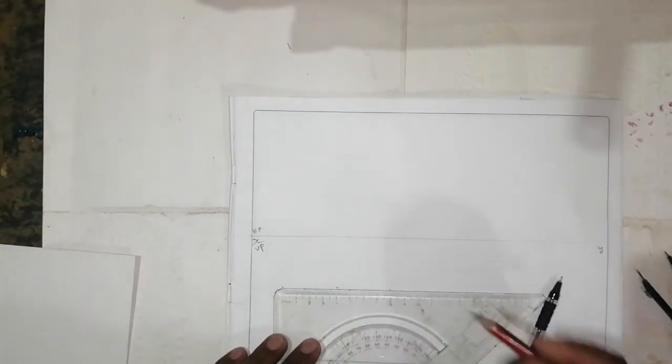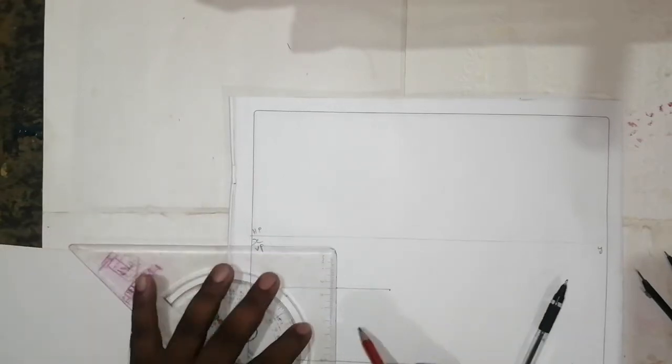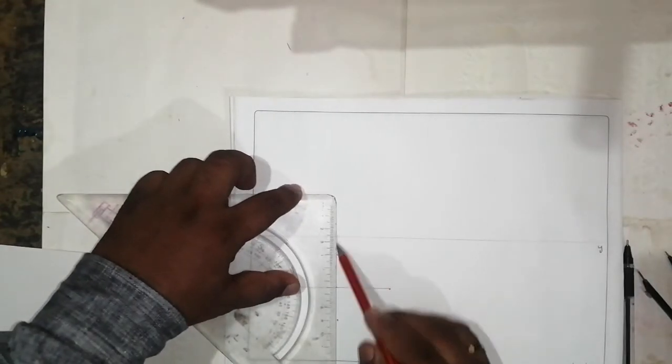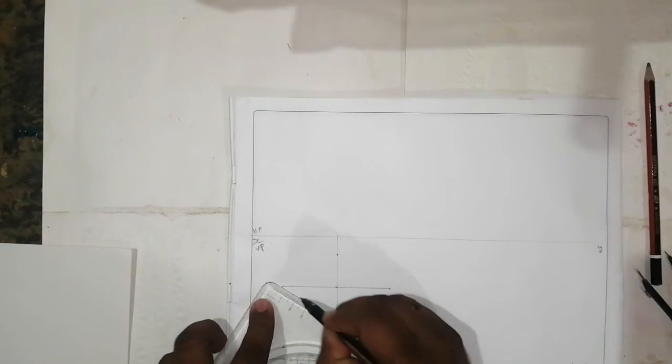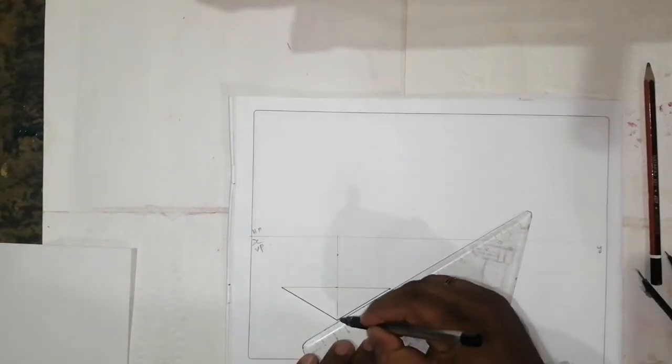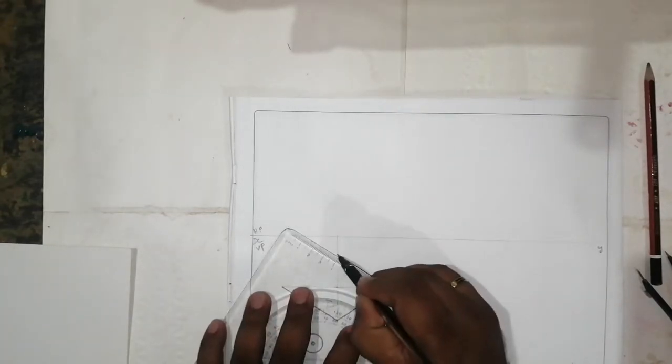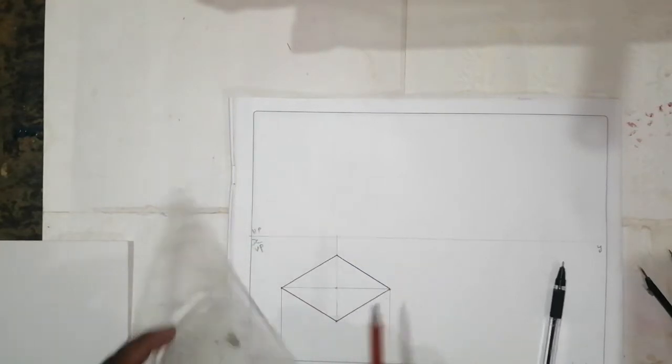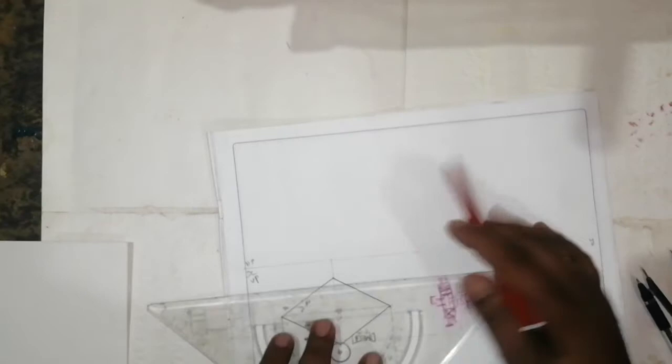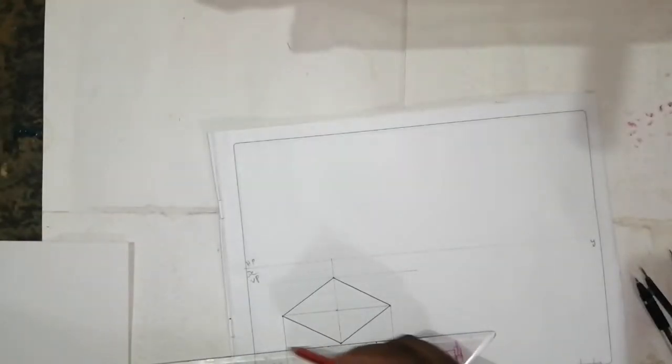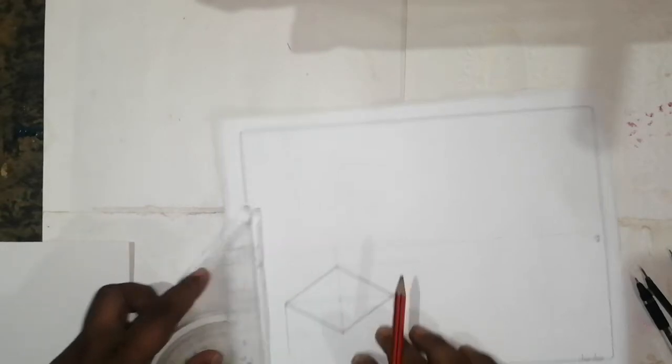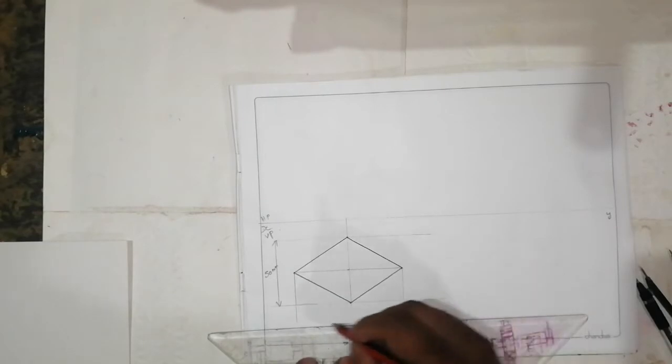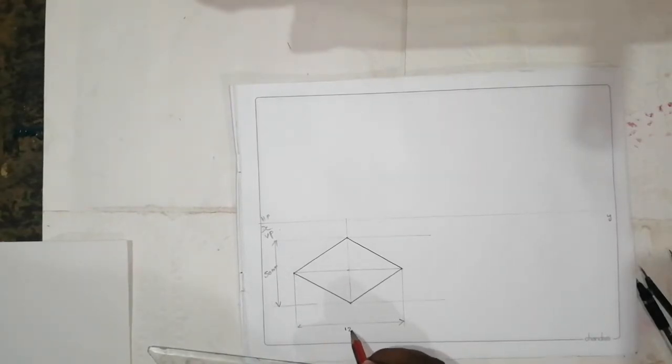Mark the middle point like this. The given is 50 mm for the rhombus, going through the center. This is going to be 125 mm. This is 50 mm, this is 125 mm.